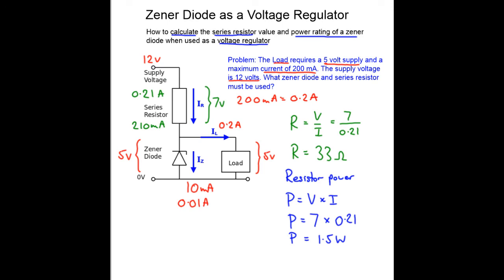So we've calculated the resistor value and the power of the resistor, but what about the power of the Zener diode itself? Well let's add to our diagram what we've calculated already.